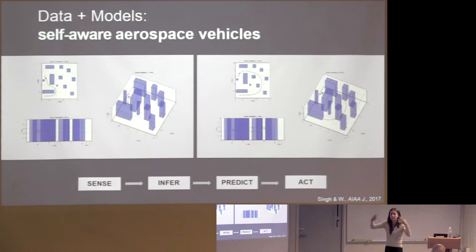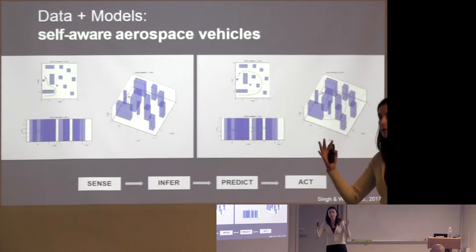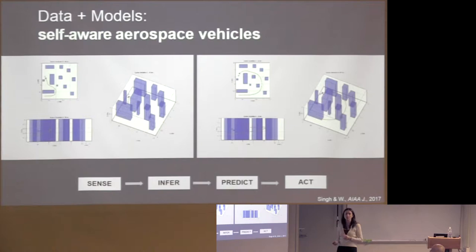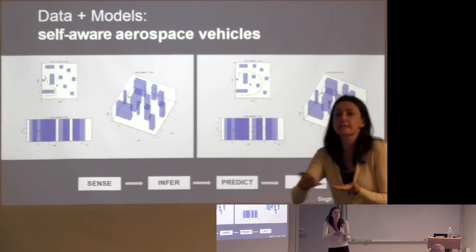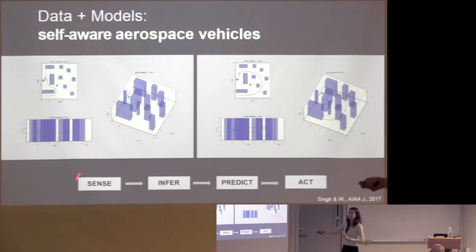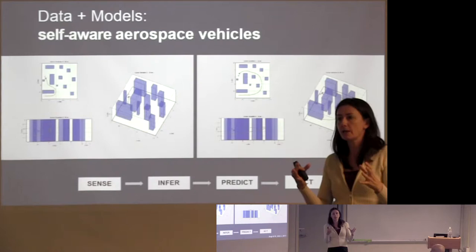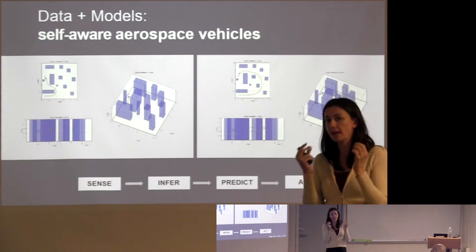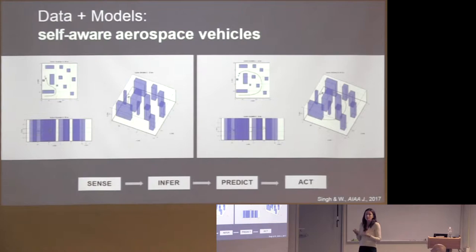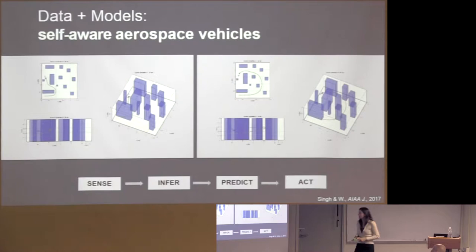A really key idea — this is where the beauty of engineering and math comes together — is that by considering the whole data-to-decisions flow together, the entire problem can often be much simpler than any of the individual pieces. If we try to solve just the inference problem or just the prediction problem, it often involves a very high-dimensional state. But if the goal is to go from data to a decision, we can be goal-oriented and find a low-dimensional model that captures that essential behavior from data to decisions, and use that low-dimensional model to accelerate the computations.